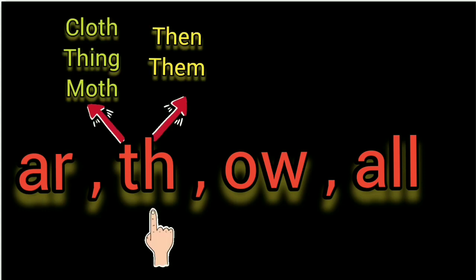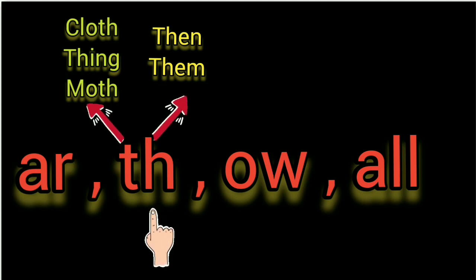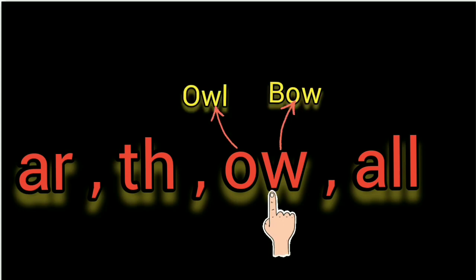AR — AR as in car, far. TH — TH has two sounds. First sound is THA. Second sound is THE. Examples of the THA sound are cloth, thing, moth. Examples of THE sound are then, them. OW — OW also has two sounds: OW as in owl, and O as in bow.